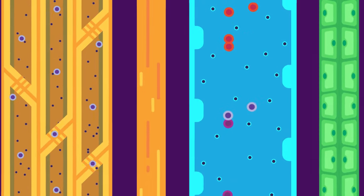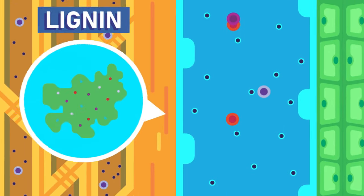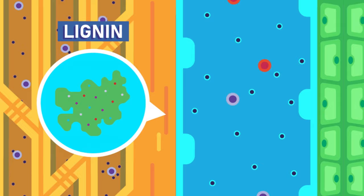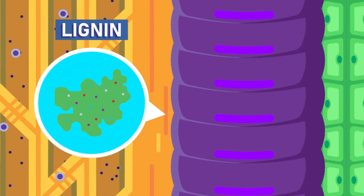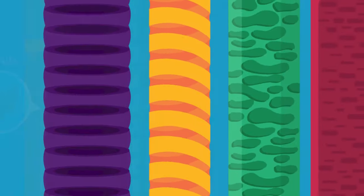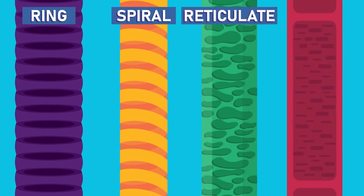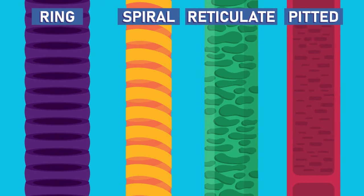The xylem cells are strengthened by a substance called lignin. The pattern of lignin will vary depending on the location. It can be a ring pattern, spiral, reticulate, or pitted.